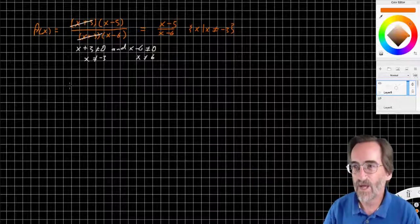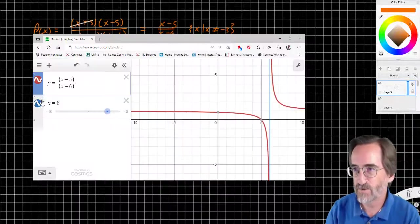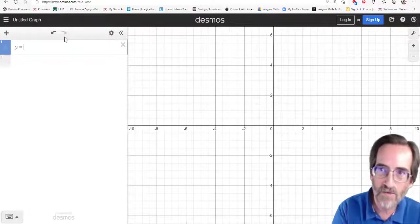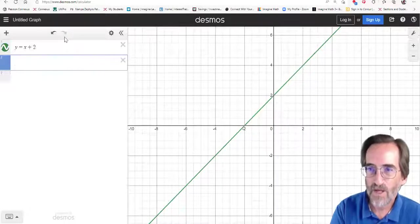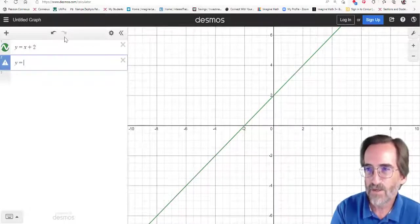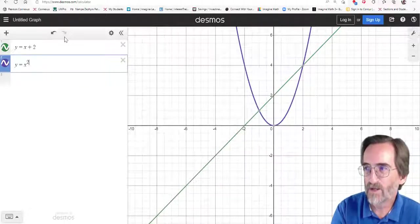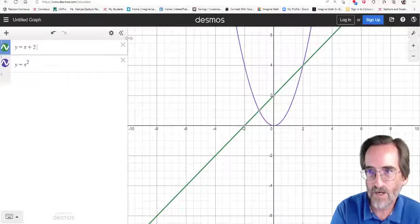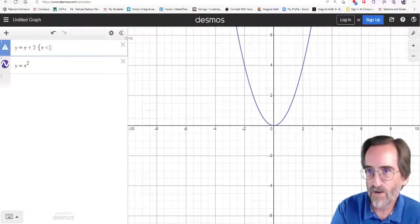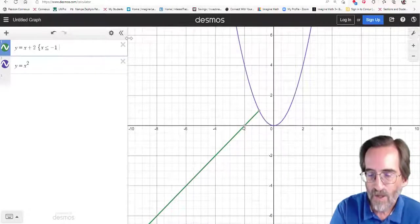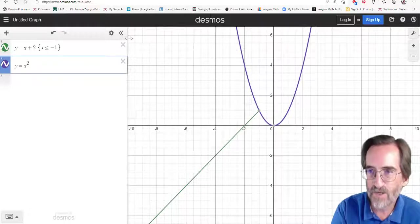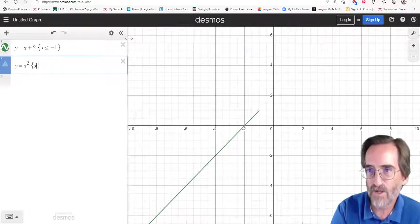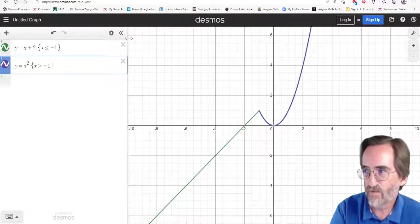One more type of discontinuity that can occur. Let's say we do this. I'm just going to use Desmos here. I'm going to do a piecewise function. I'm going to say y equals x+2, and y equals x squared. But I'm going to add some domain restrictions here. So x+2 is going to be for x less than or equal to negative 1. And y equals x squared is going to be for x greater than negative 1.